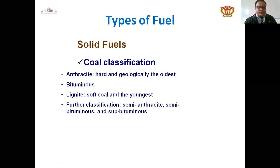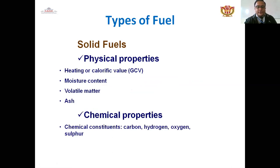Coal is a fossil fuel, which is naturally available. Its types include anthracite, which is hard and geologically the oldest; bituminous coal; lignite coal; and further classifications of semi-anthracite, semi-bituminous, and sub-bituminous coal. For physical properties of solid fuel: heating or calorific value is higher, moisture content is higher, volatile matter is higher. Chemical properties include chemical constituents: carbon, hydrogen, oxygen, and sulfur.